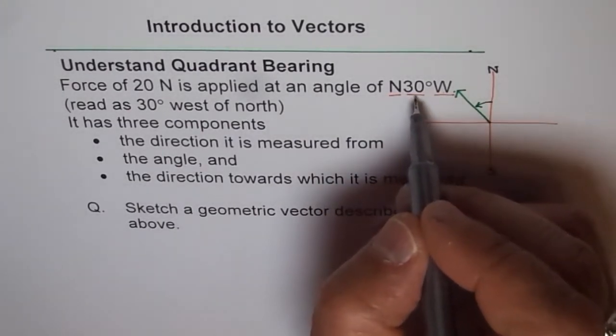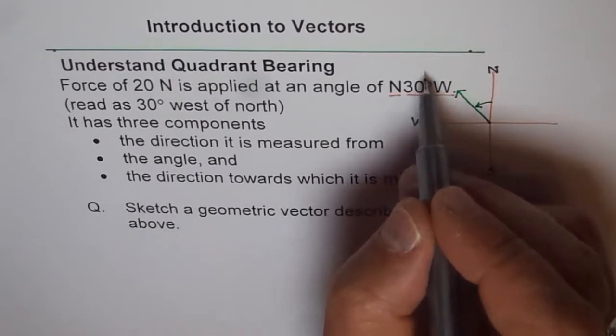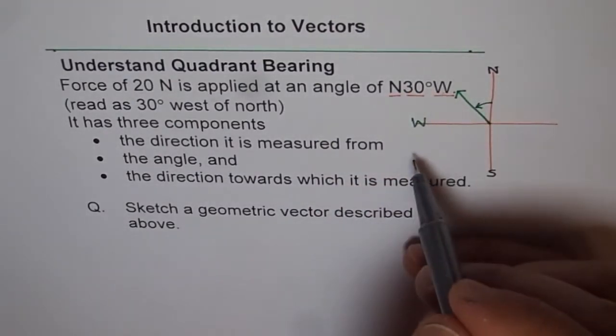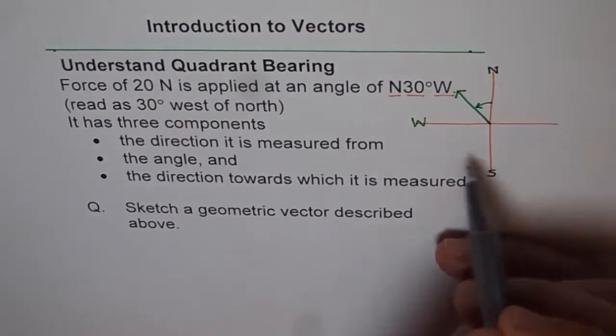And the second component is an acute angle. It could be from 0 to 90 degrees. And the third component could be east or west.